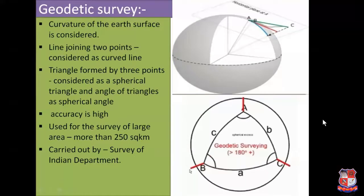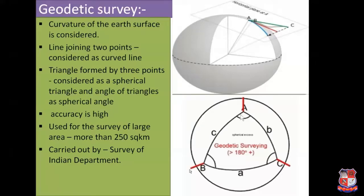The next one is geodetic surveying. In geodetic surveying, the curvature of the earth surface is taken into account during the survey work. So in geodetic surveying, the line between two points is always a curved line. You can see in the figure that A, B, and C are three points on the surface of the earth, and the lines AB, BC, and AC are curved lines because we are considering the curvature of the earth.